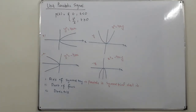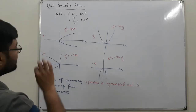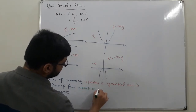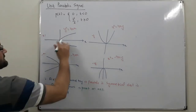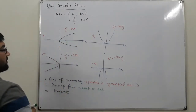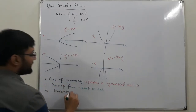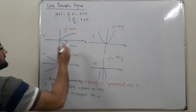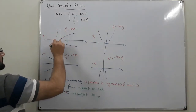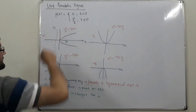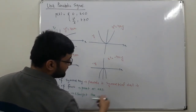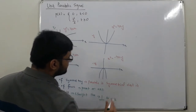The point of focus is a point on the axis of symmetry — let's call it F. The directrix is a straight line which is perpendicular to the axis of symmetry — let's call it D. So the directrix is perpendicular to the axis.